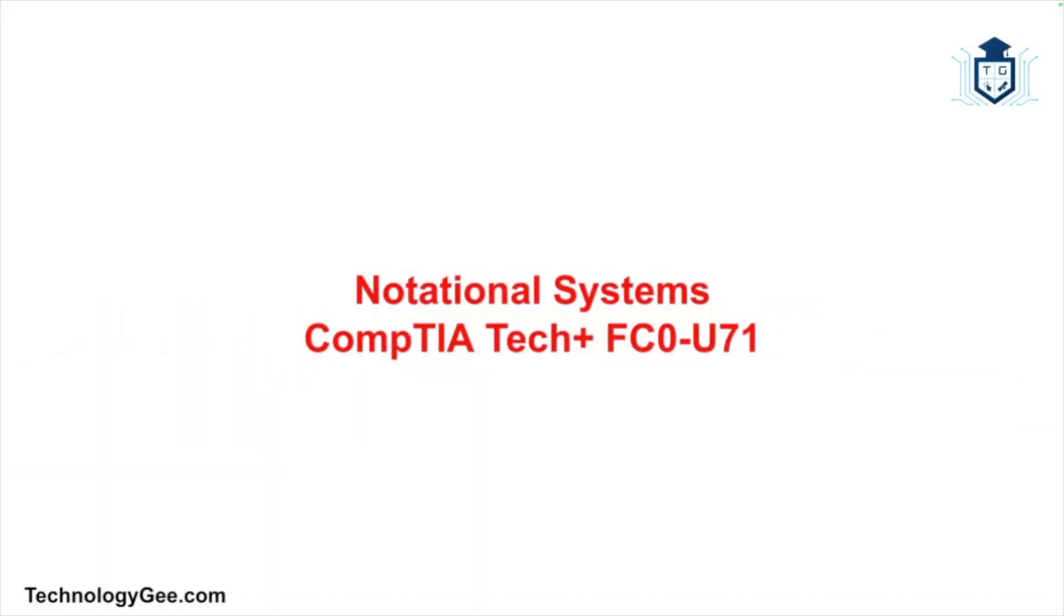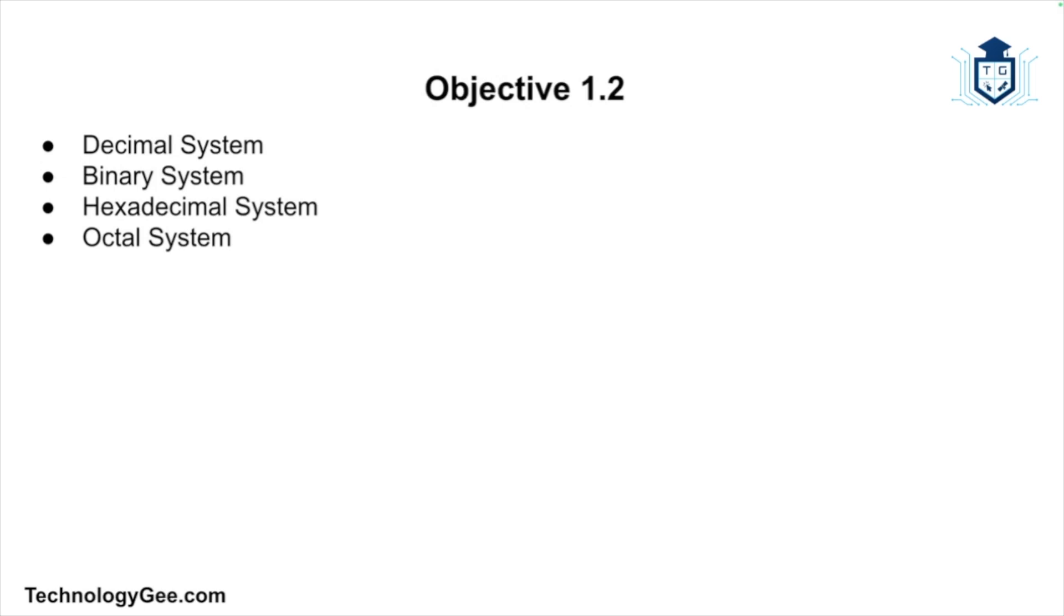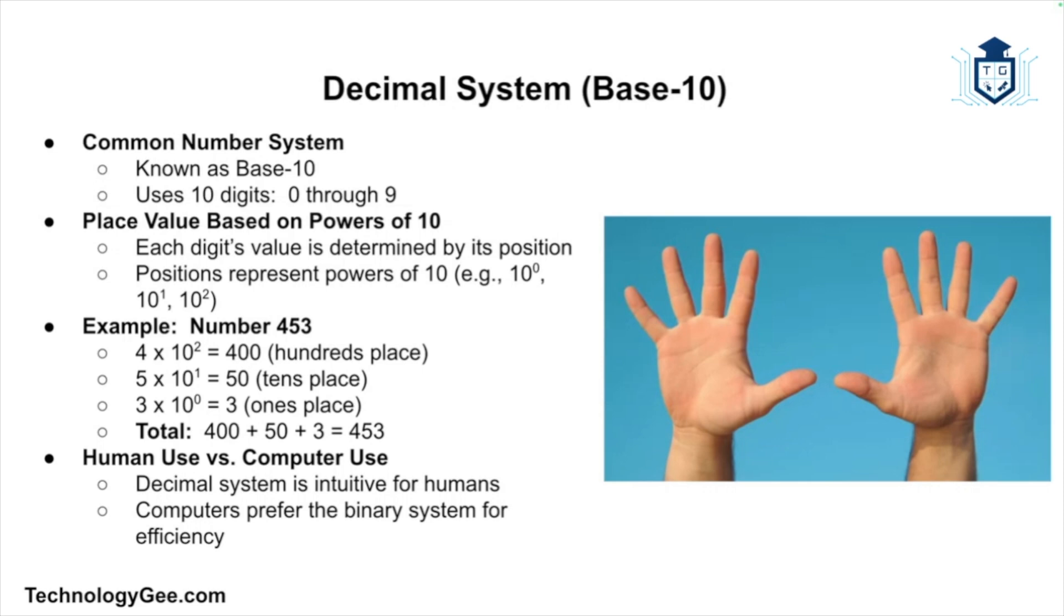What's up everybody, this is Tech G back with another video to help you successfully pass the CompTIA Tech Plus FC0-U71 certification exam. In this video on notational systems, we'll be exploring the four major number systems such as binary, hexadecimal, decimal, and octal. Each of these systems plays a crucial role in computing and understanding how they work is essential for anyone preparing for the CompTIA Tech Plus certification exam.